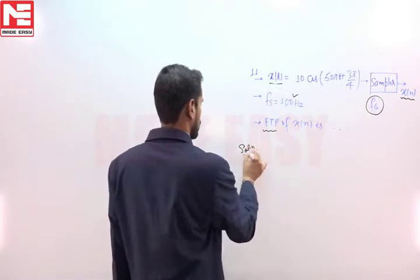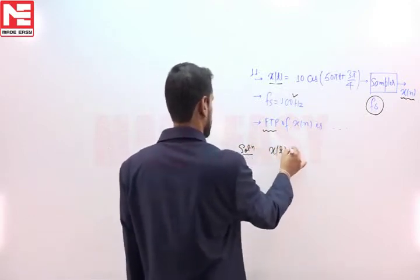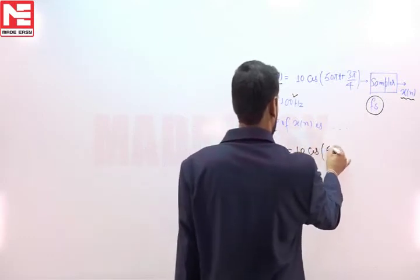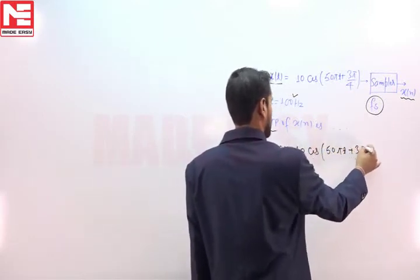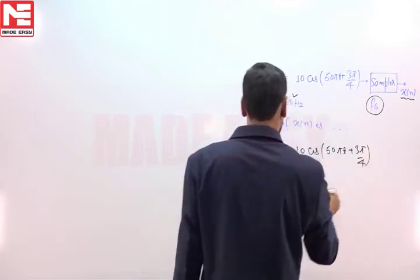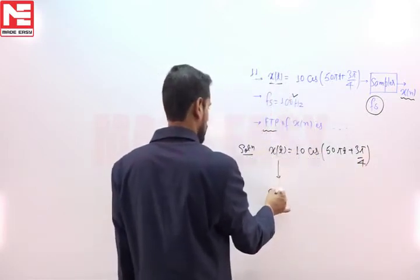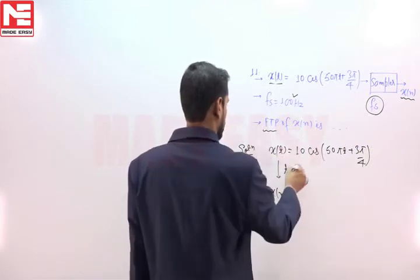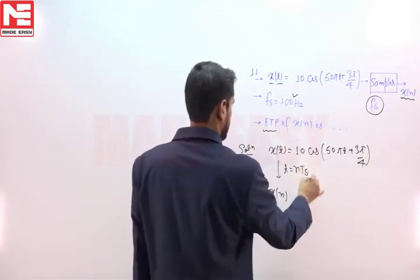First of all, we have to convert this continuous time signal x(t) into its discrete version. To convert x(t) into discrete form, we will replace variable t by n·ts.